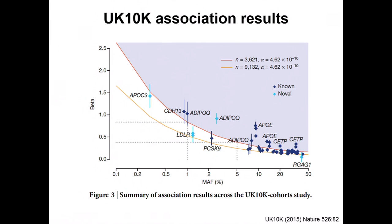Shown here is a plot of the variants identified in this study, returning to the relationship between minor allele frequency and effect size. A lot of the variants identified are common variants. By doing these sequencing-based studies, they're moving along this axis to be able to look at lower-frequency and rare variants, and to detect them, many end up needing somewhat higher effect sizes given the sample sizes available.